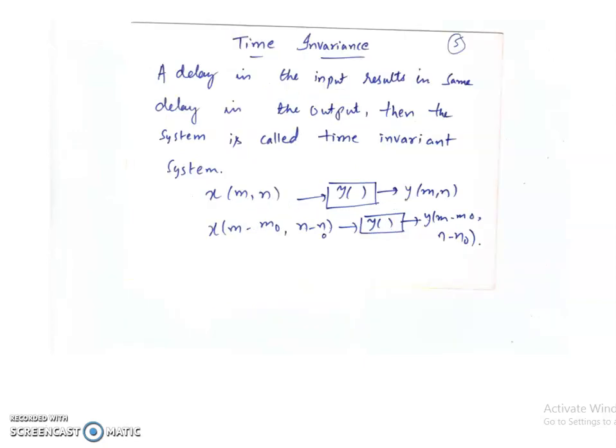What is time invariance? A delay in the input should result in the same delay in the output — that is the importance of time invariance, so that a delay does not distort the output. If a system obeys both linearity and time invariance, we call it a linear time invariant (LTI) system. In the discrete case, we generally call it a linear shift invariant (LSI) system.